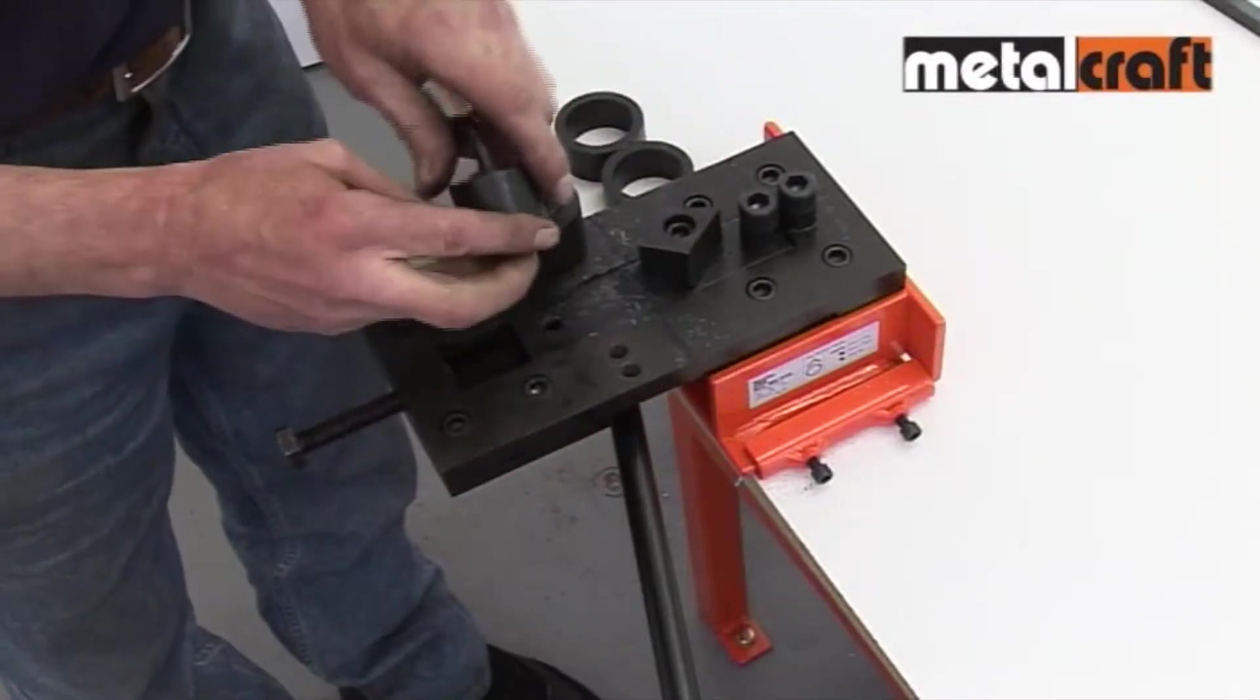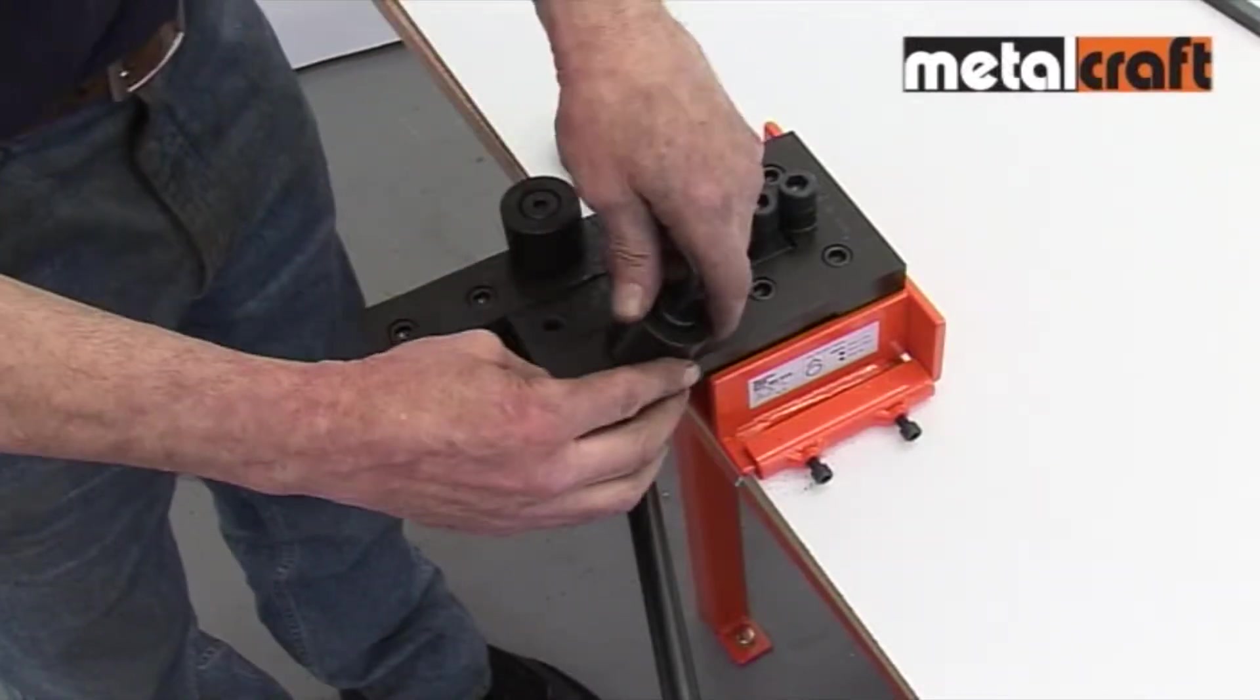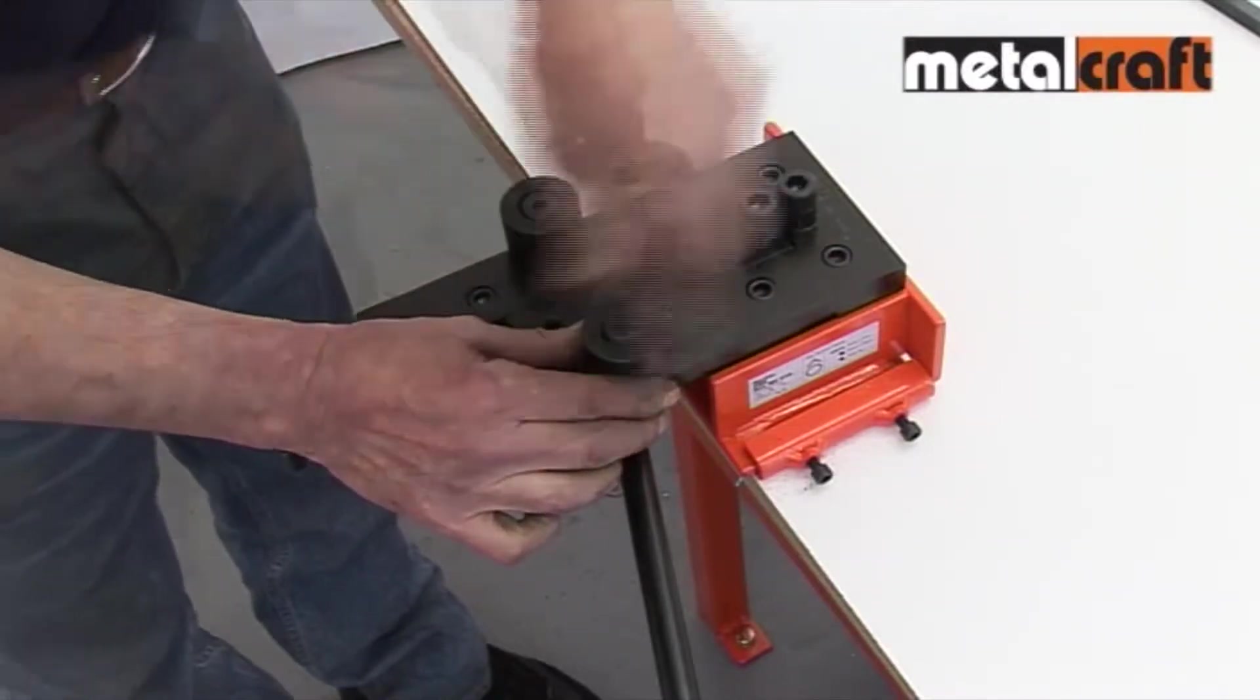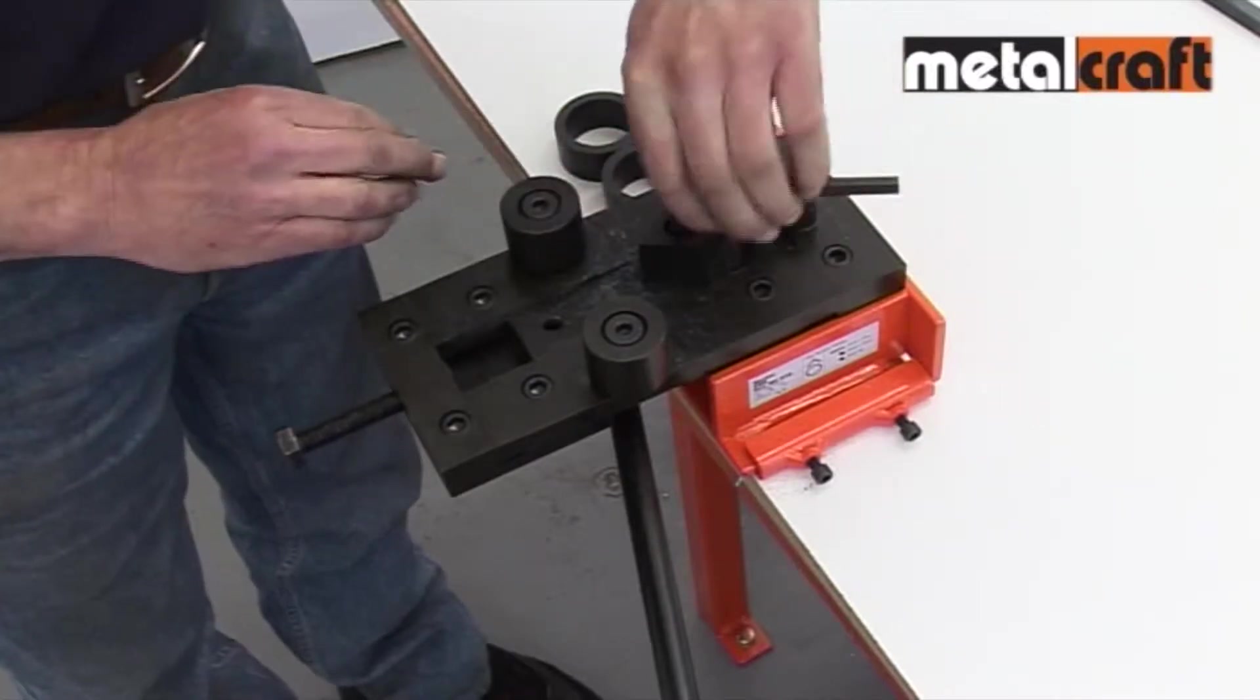Moving the side rollers to the outer hole positions on the body makes bending heavier gauge bars easier. With the bending head switched round,